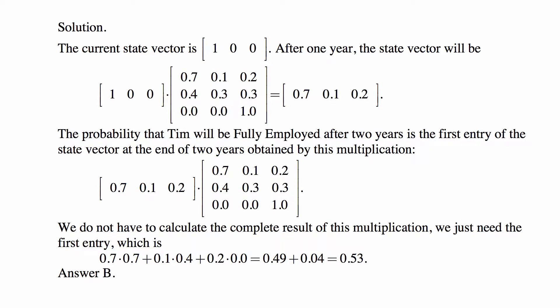The current state vector for this worker is (1, 0, 0), because he is fully employed — in state 0 with probability 1 and in other states with probability 0. After one year, the state vector is given by the product of this current state vector times the transition matrix. Because it's (1, 0, 0), that's just the first row of the matrix: you multiply the row (1, 0, 0) by each column, and since there are zeros in the second and third positions, everything from the second and third rows is multiplied by zero.